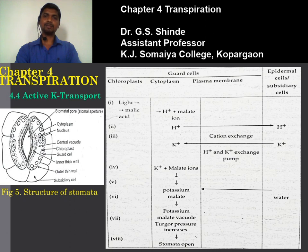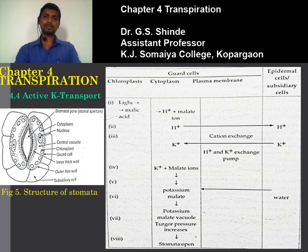As K+ ions are actively transported into the guard cell, they combine with the malate ions and form potassium malate. Potassium malate is soluble in water and osmotically active; it increases the osmotic pressure of the guard cell. Endosmosis takes place — guard cell draws water from the surrounding epidermal or subsidiary cell, becomes turgid, and turgor pressure increases. The outer wall of the guard cell, being thin and elastic, gets stretched, while the inner wall, thick and non-elastic, becomes concave — as a result, the stomata get opened.